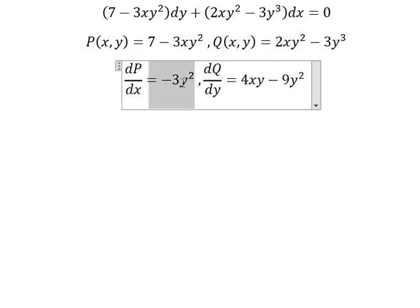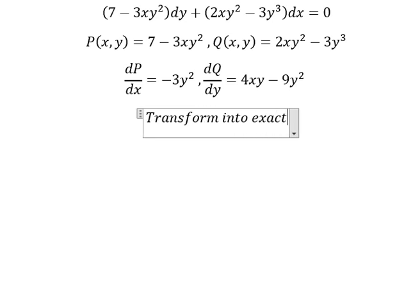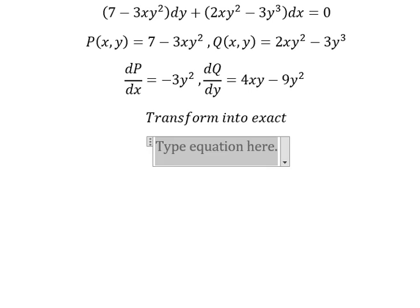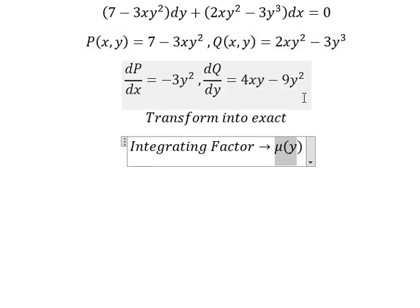We see that ∂P/∂x is not equal to ∂Q/∂y, so we can use the technique to transform into exact. We see that we have y, y squared, y squared. So in this situation, I will put about an integrating factor, and that should be μ(y). Because if I put μ(y), we can simplify the y terms, and later we can find the integrating factor.